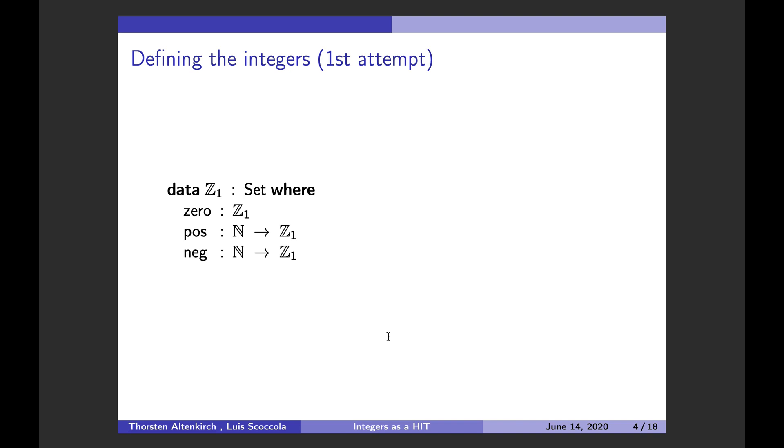And it has some nice properties. As I already mentioned, we know that the equality of numbers is a proposition of natural numbers, and it implies that this representation of the integers has all the propositional equality. It's an H set, as we say, it's a simple type. So that's good.